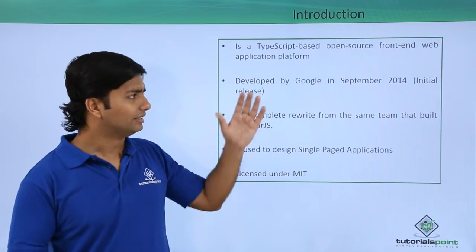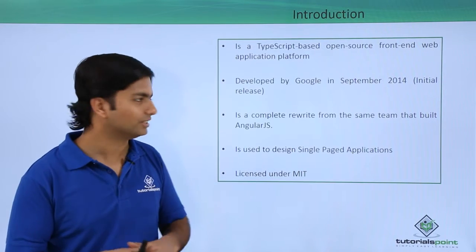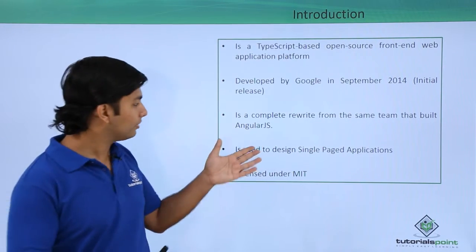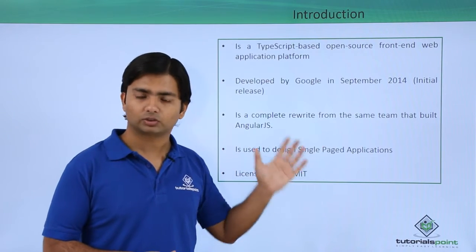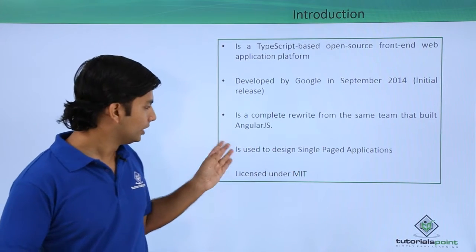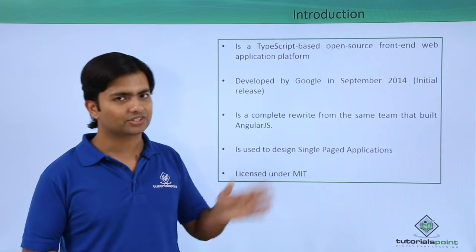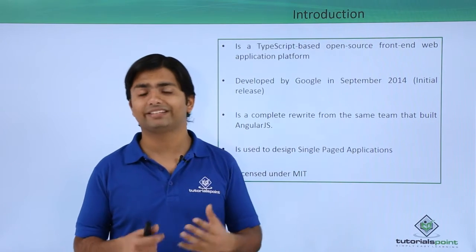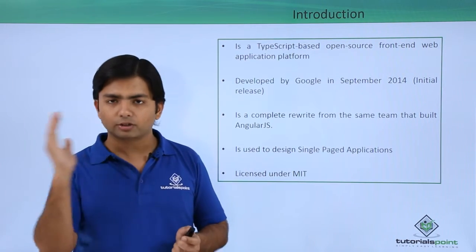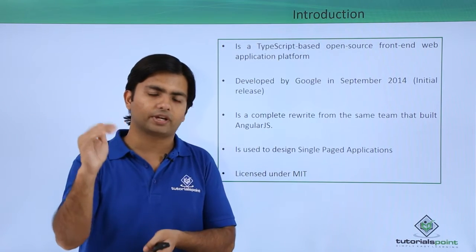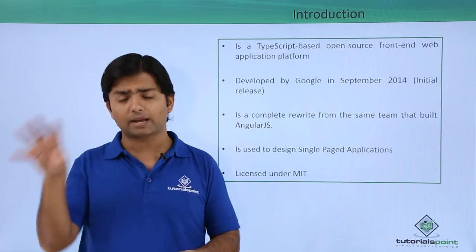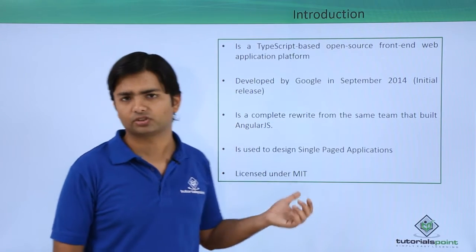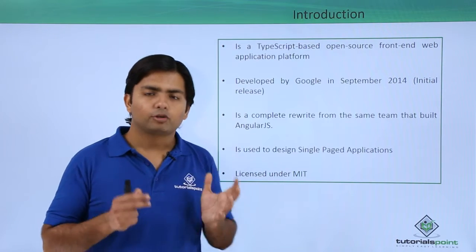Angular 2 is a web application platform developed by Google, launched in September 2014. In this short span of three to four years it has become very common in the development world. It is a complete rewrite from the same team that built AngularJS, so even if you don't know AngularJS you need not worry — it is a completely new thing. It is used to design single-page applications, where even navigating through multiple pages just renders a partial page in the current location. It is licensed under MIT — the Massachusetts Institute of Technology.